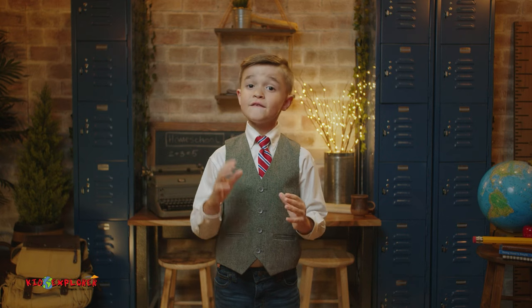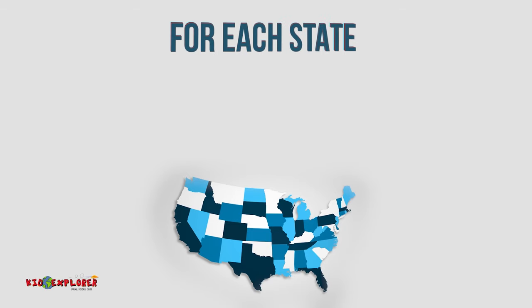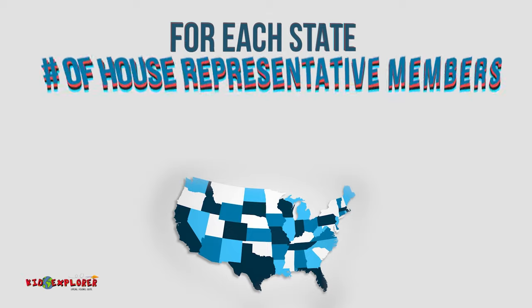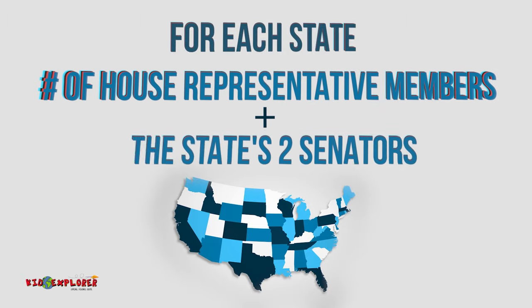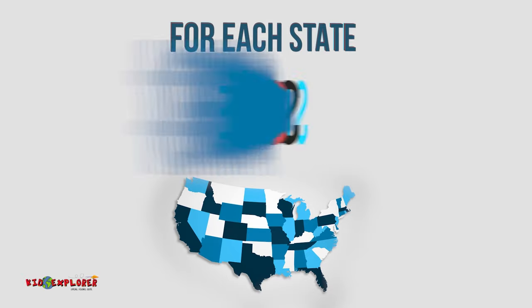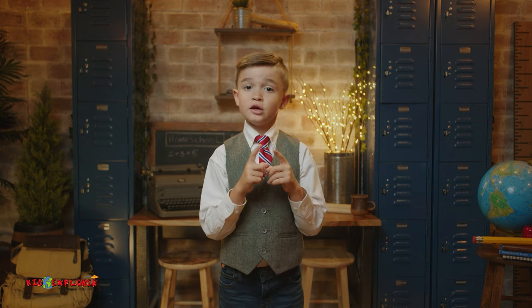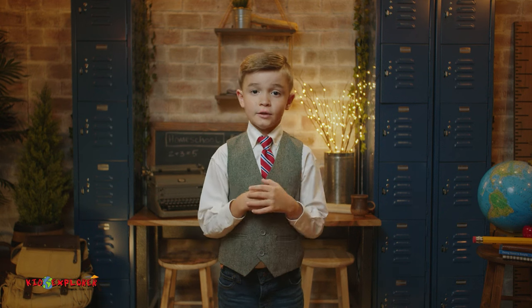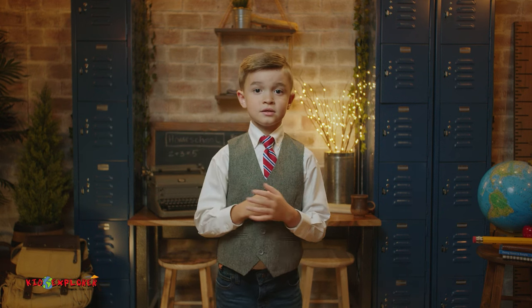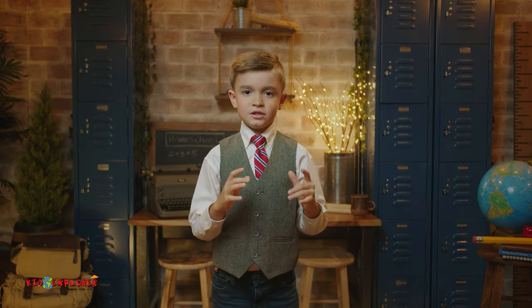This is a huge benefit for smaller states. So, the number of House representatives for a state plus two senators equals the number of electoral votes each state gets. You just add those two numbers together — number of House representatives plus the two senators — and you get the state's allotment of electors.